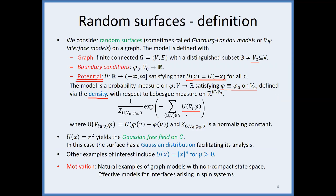A random surface is a probability measure on height functions on the graph, equal to the boundary values on the boundary set, with density of the product form e^{-sum over all edges of U applied to the gradient}. For instance, you can take u(x) = x^2 — the standard case — which yields the Gaussian free field. If the gradient is seven, you pay 49 in the density. You can also consider u(x) = x^4 or other powers. The Gaussian free field is well understood because it has a Gaussian distribution; any other choice of u generally makes things harder.